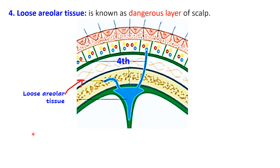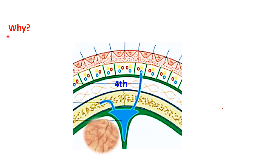Why is this known as the dangerous layer of scalp? We call something dangerous only if it is responsible for causing a serious health problem. Suppose there is some infection in the scalp and it is carried to the cranial cavity — that infection can involve the meninges and the brain as well, causing a serious health problem. Let us see how this infection can be carried from the scalp to the cranial cavity.